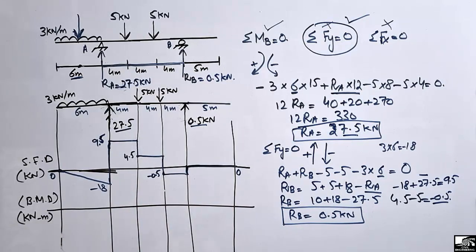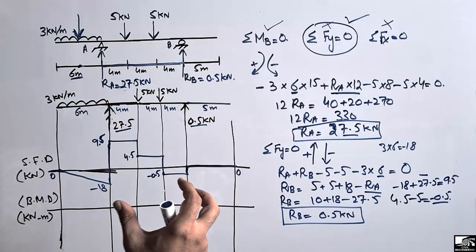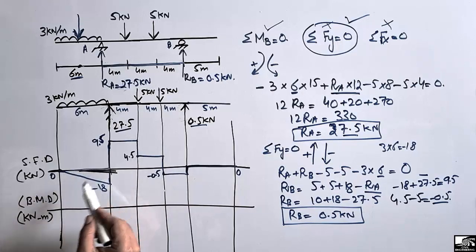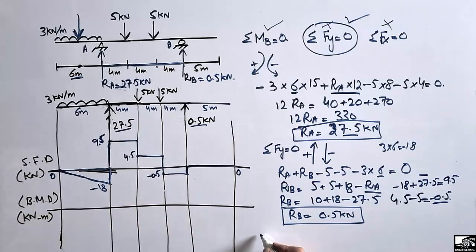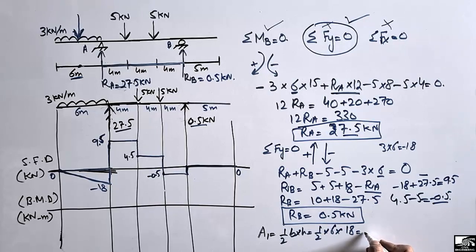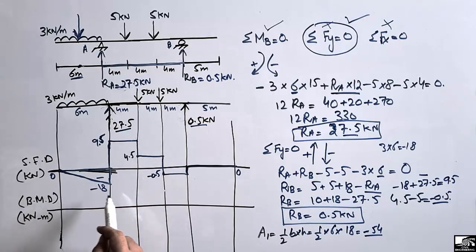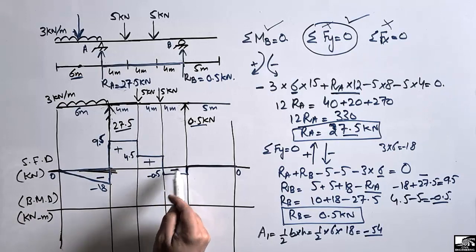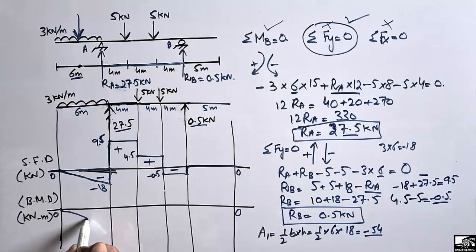To draw the bending moment diagram, we find the areas of the shear force regions, which give the bending moment values. The first region over the 6 m distributed load span is a triangle with height 18 and base 6, giving area A1 = ½ × 6 × 18 = −54 kN·m (negative because it is below the zero reference line). Starting from 0, the bending moment at the end of this region is −54 kN·m.